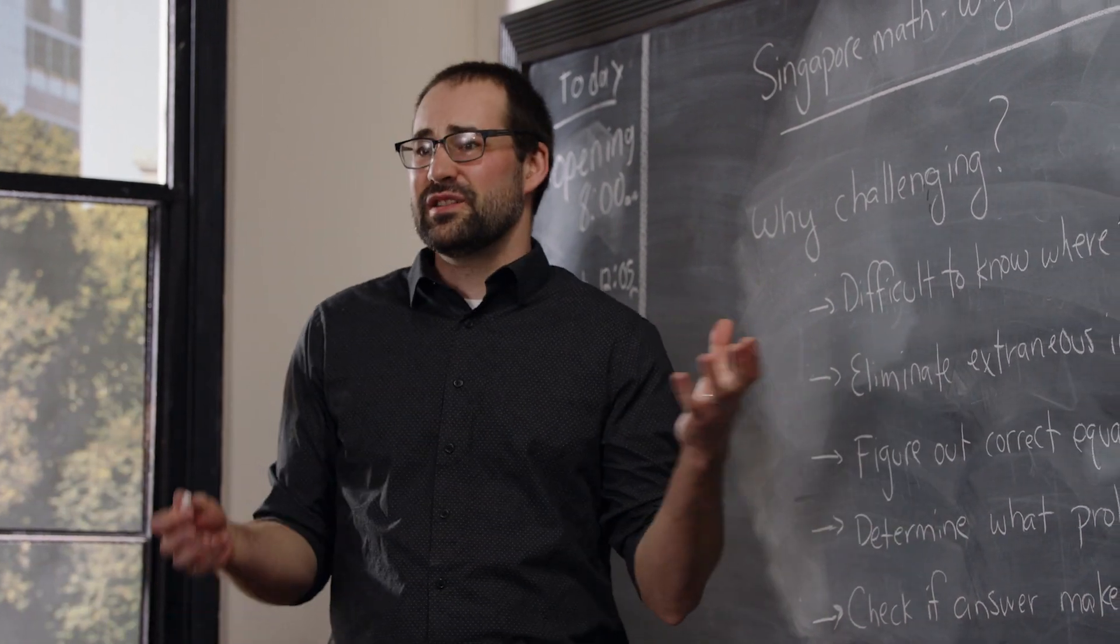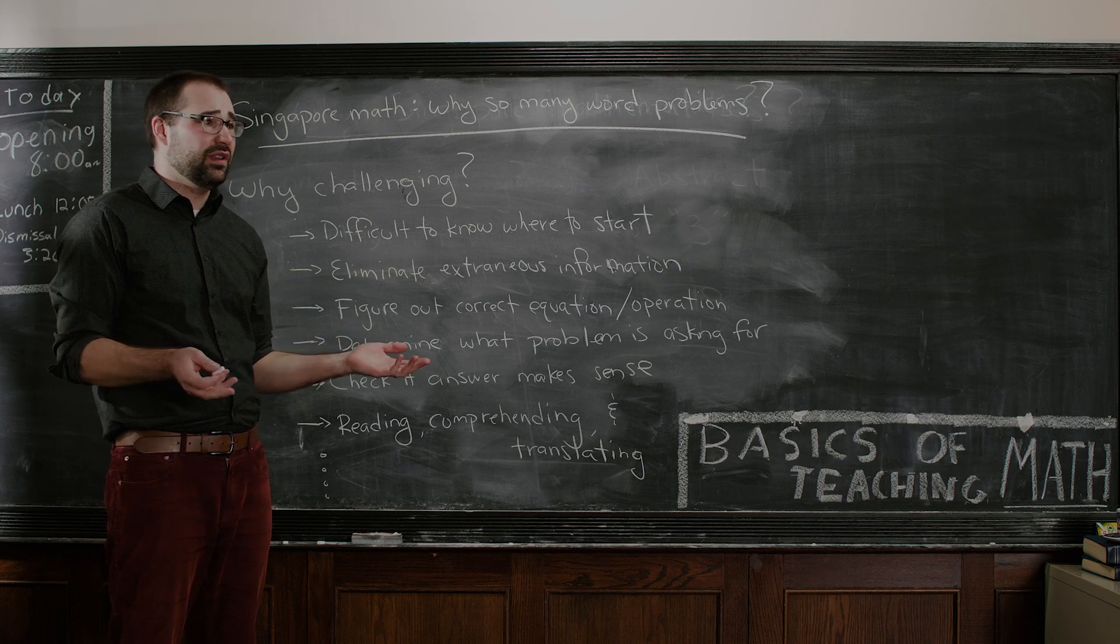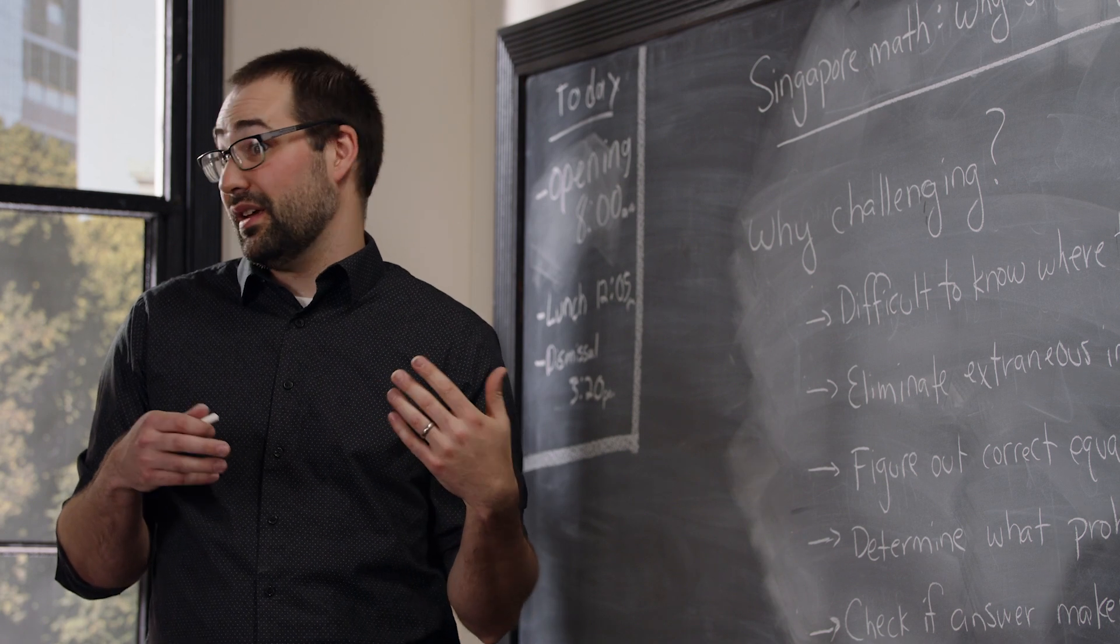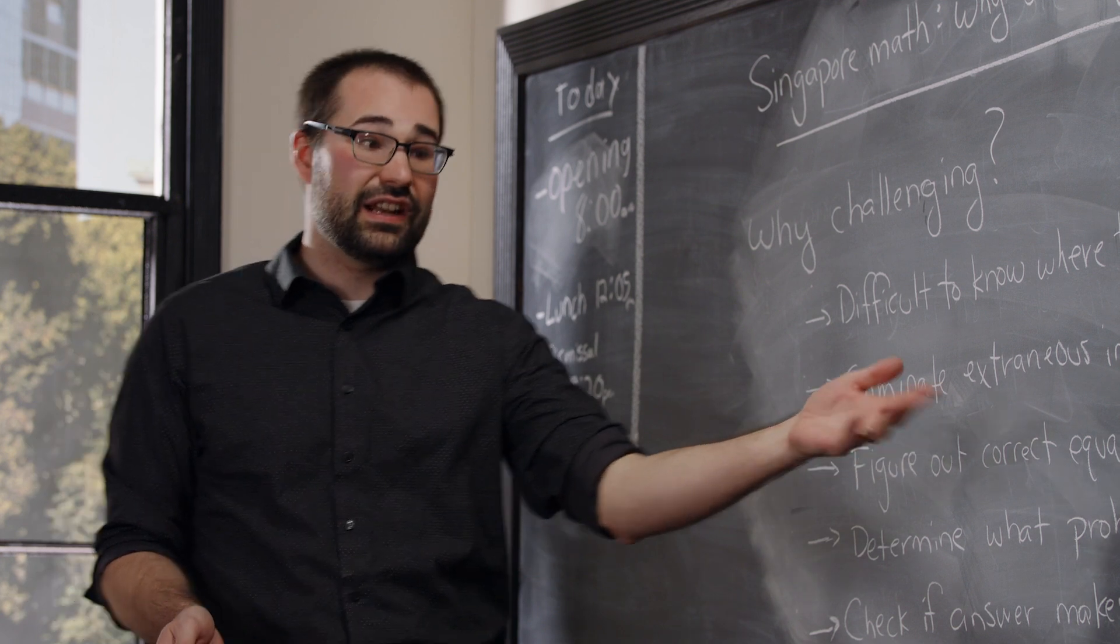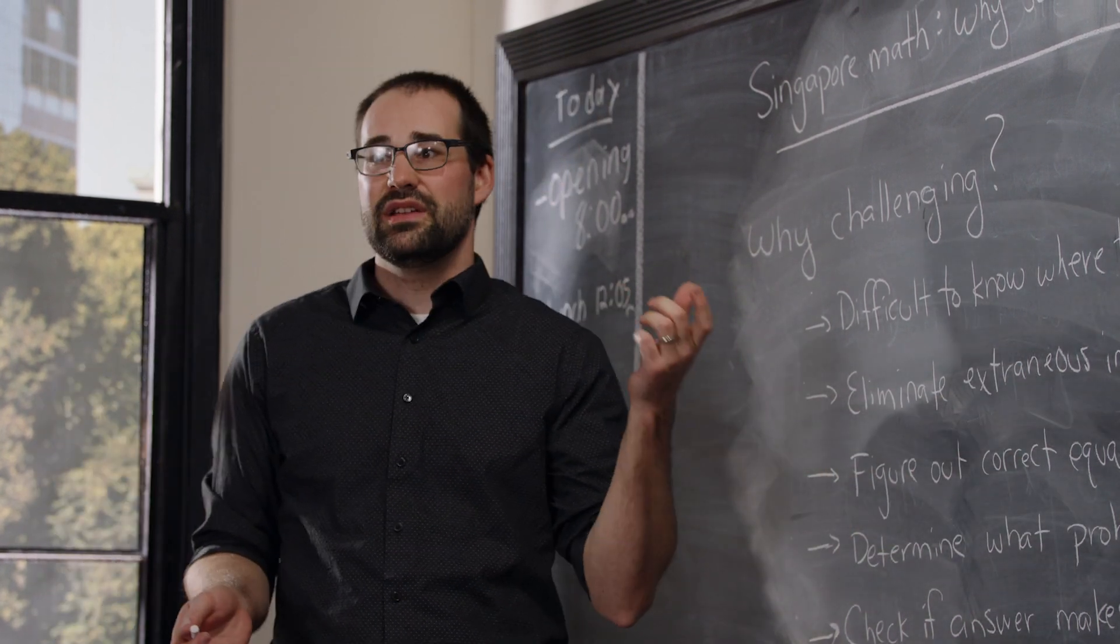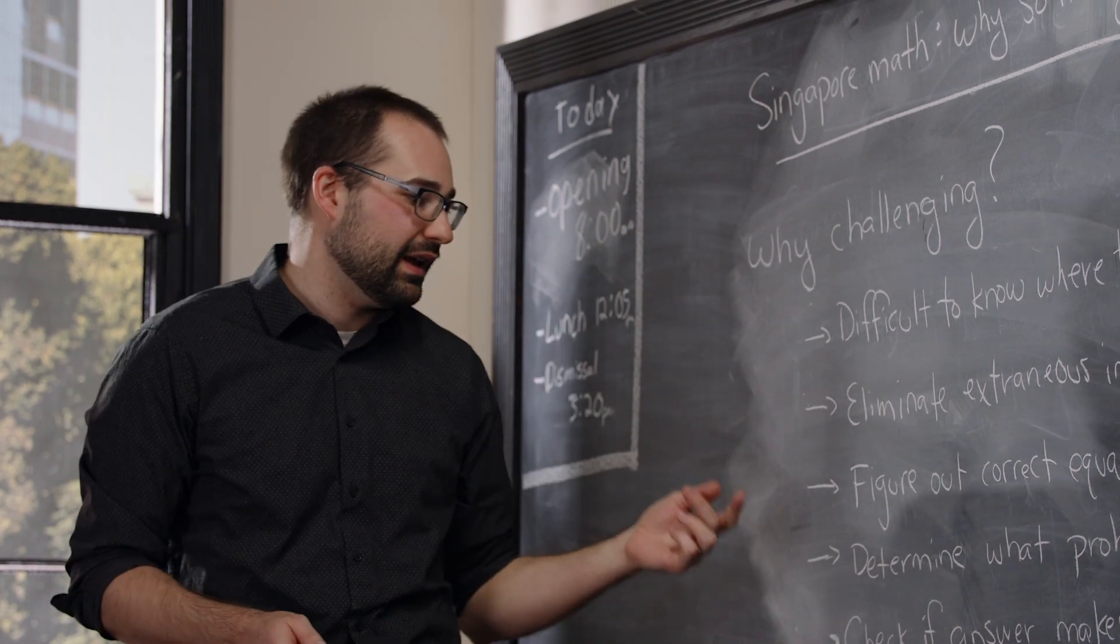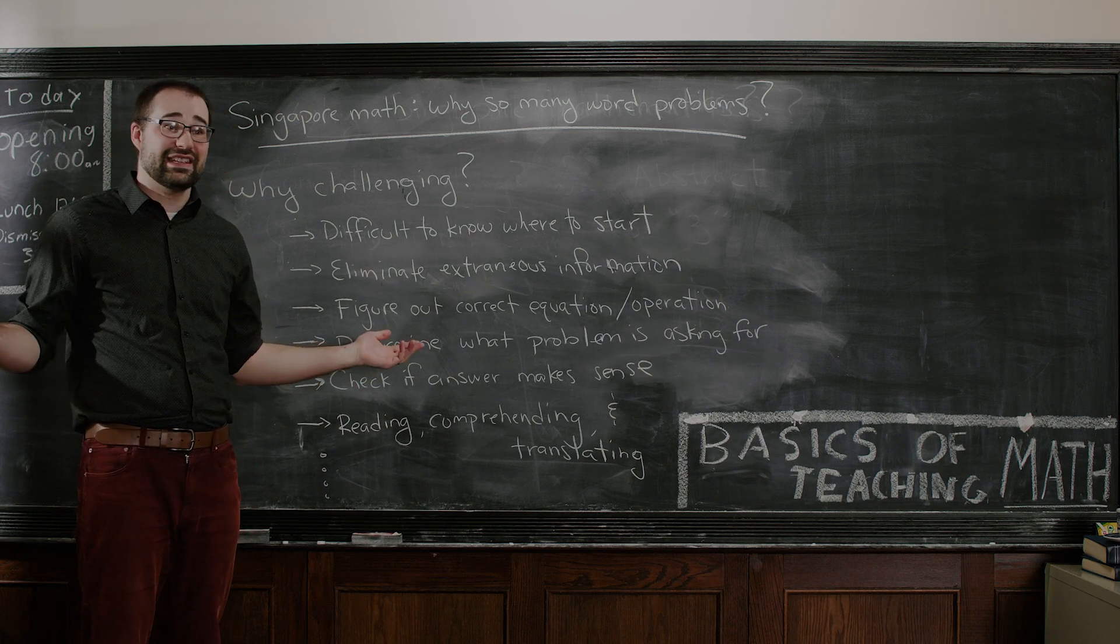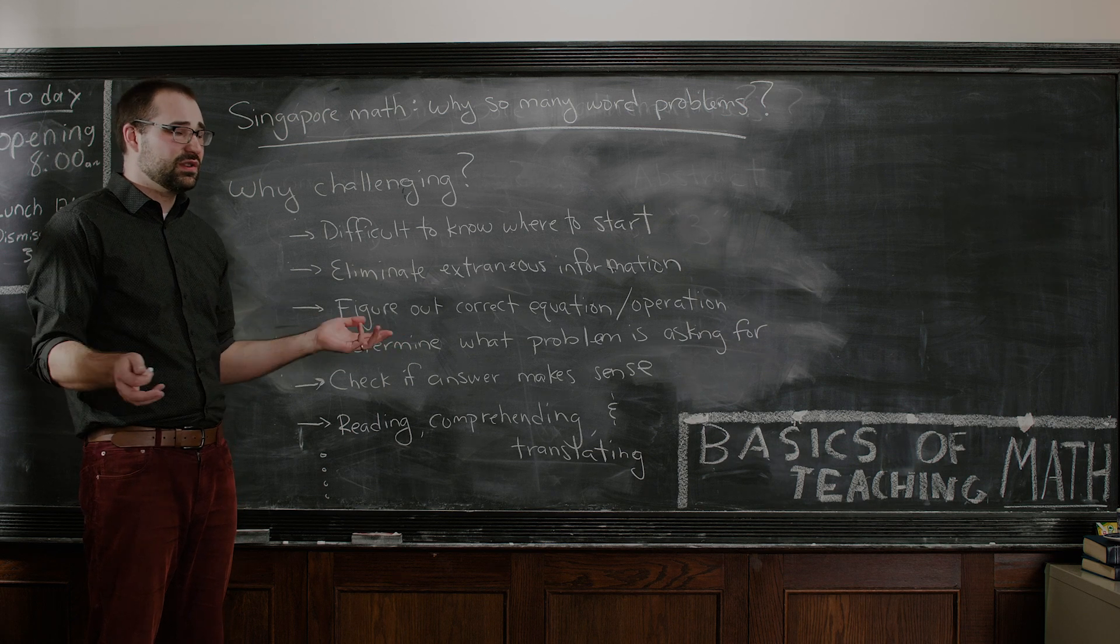Three, just the idea of trying to figure out the correct equation or operation. And a lot of times students will see two numbers in the problem and kind of just say, should we add them, subtract them? And just kind of guessing an equation or an operation. It's very difficult to go from a word problem to an equation. It's this idea of progressing from the concrete to the abstract. Fourthly, I think determining what the problem is even asking for. What do they want me to actually do here? What do all these words really mean?